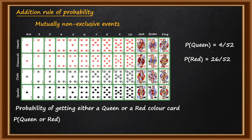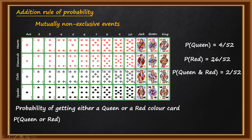Since both those cards are already included in each event's count, we have to subtract the common probability. There are two cards which are both Queen and red color, so probability of both red and Queen is 2 by 52. So the total probability of getting either a Queen or a red color card is 4 by 52 plus 26 by 52 minus 2 by 52, which equals 28 by 52.